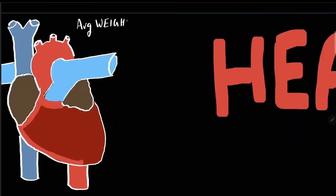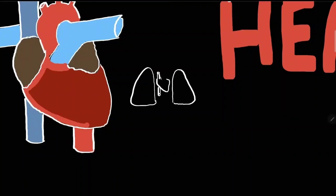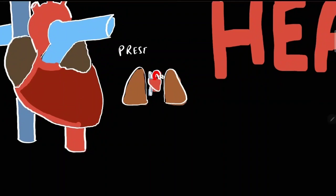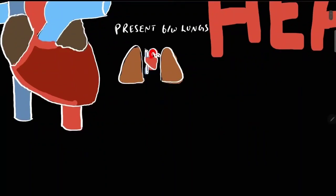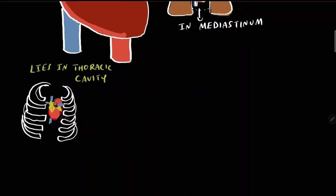The average weight of the heart in females is around 250 grams, whereas in males it is 310 grams. The heart is present between the lungs in a space called the mediastinum, and is enclosed within the thoracic cavity formed by the thoracic cage.